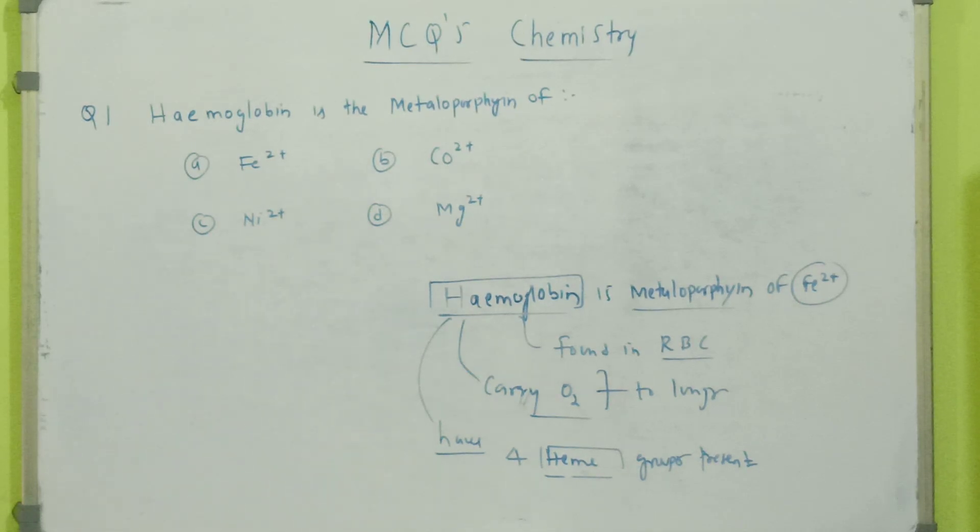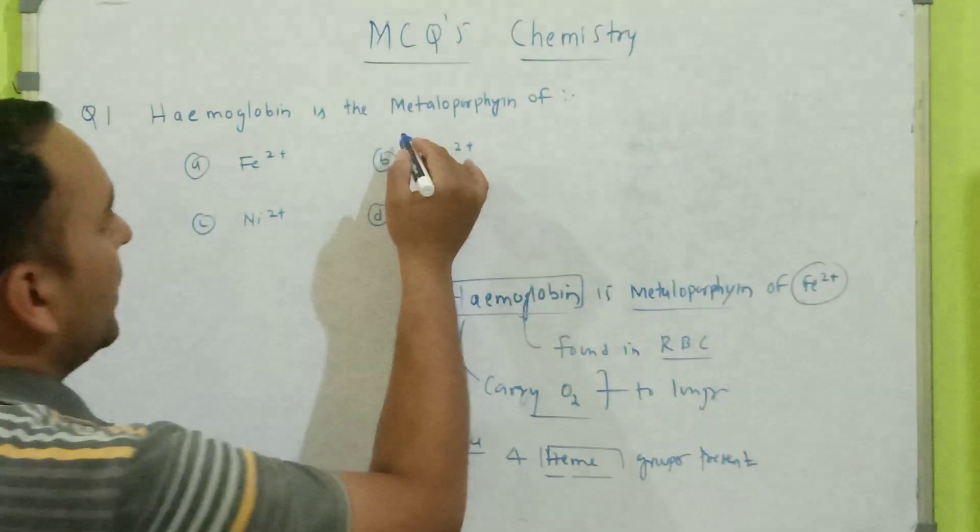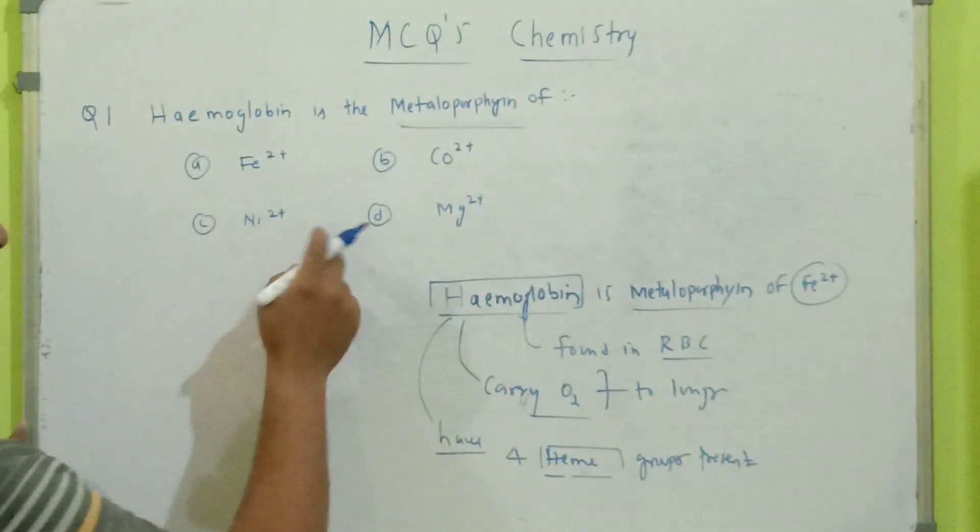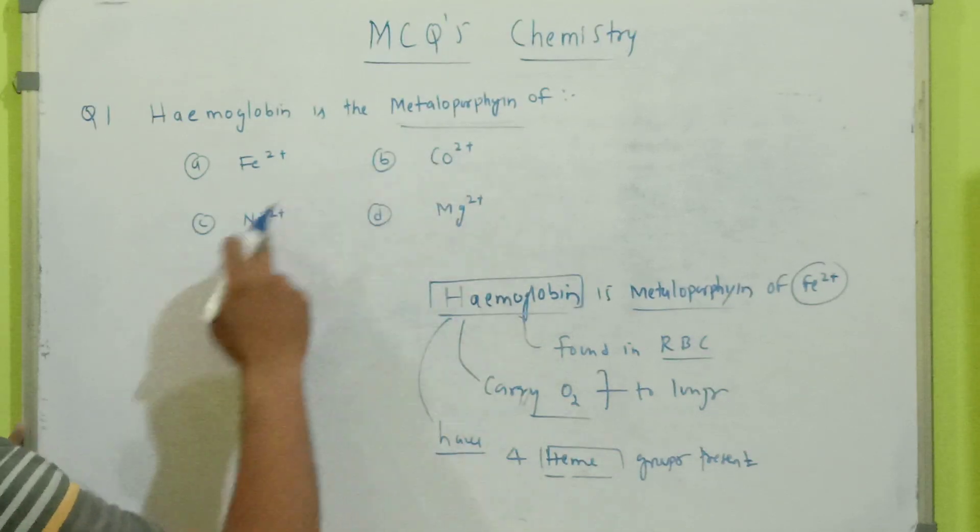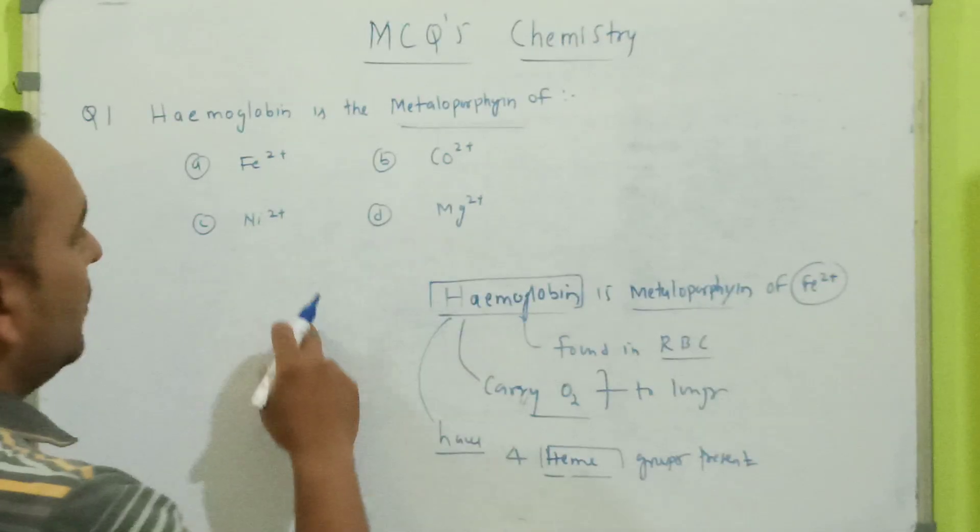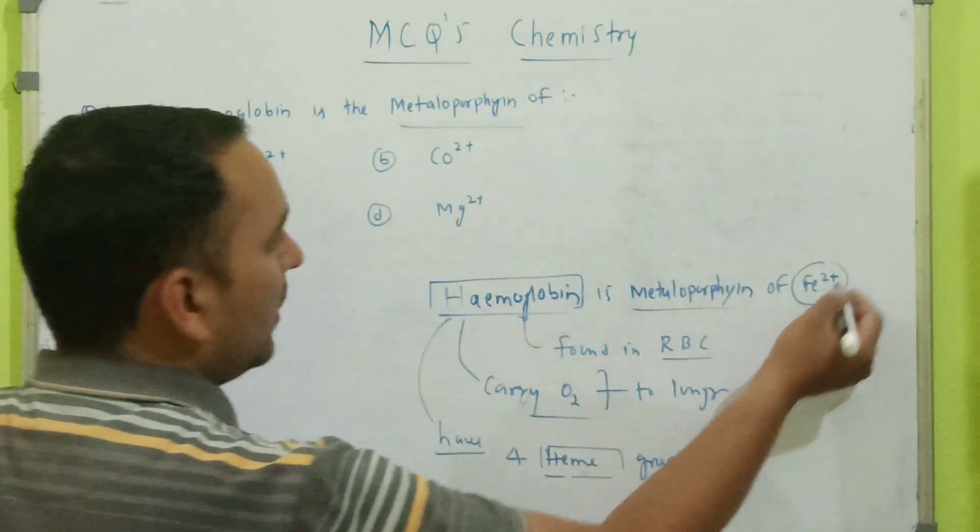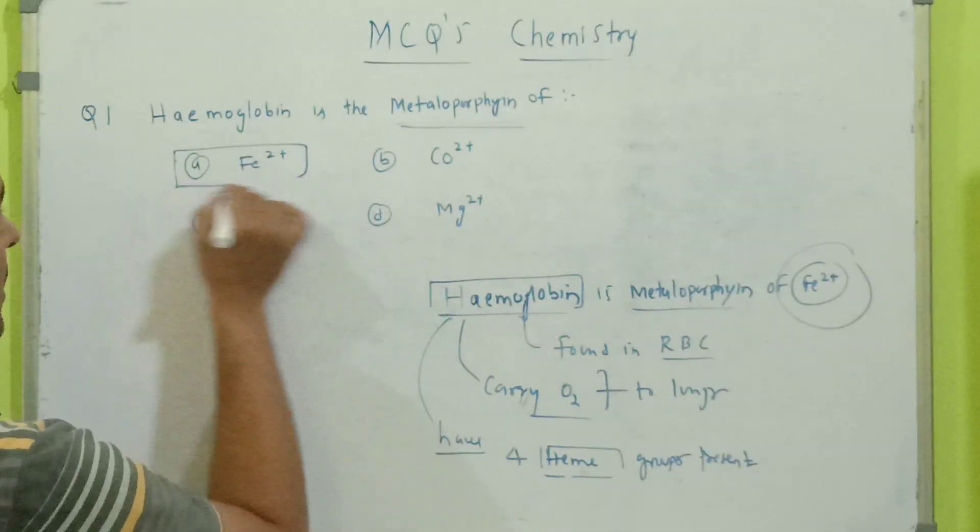Here we have our MCQ questions in chemistry. The first question is: hemoglobin is the metalloporphyrin of dash. Four options are given: Fe2+, Co2+, Ni2+, and Mg2+. We will find that hemoglobin is the metalloporphyrin of Fe2+, so option A is the correct response.